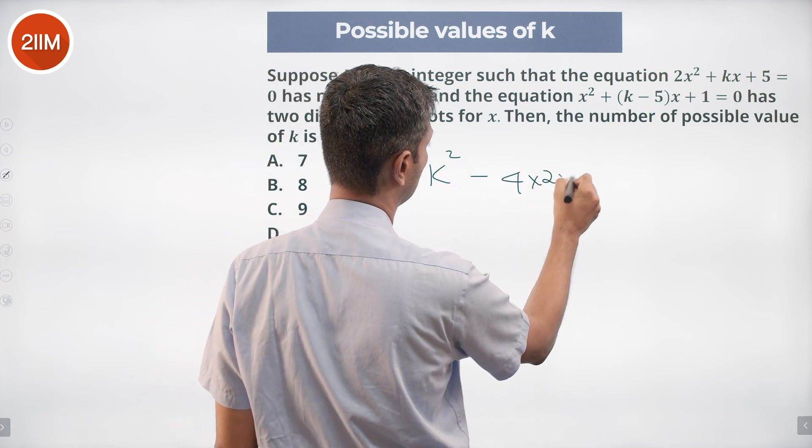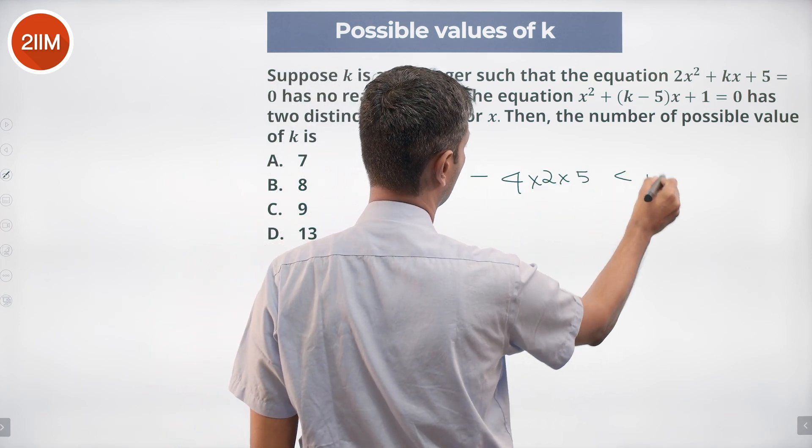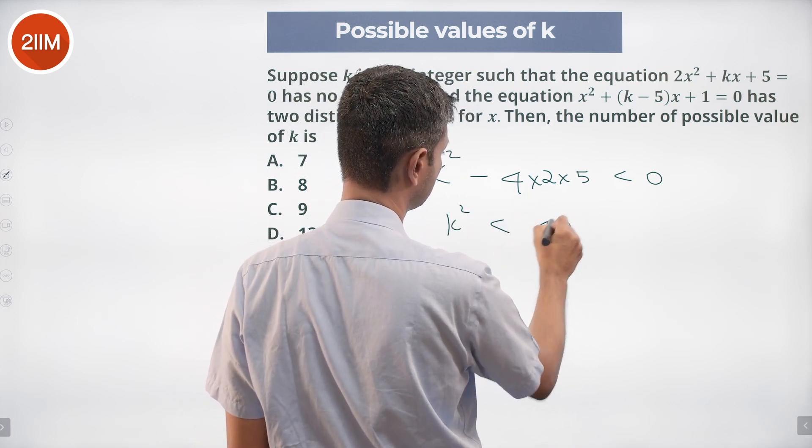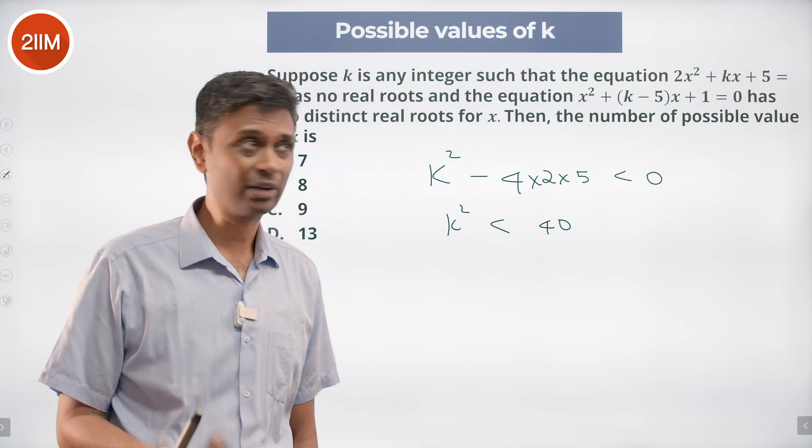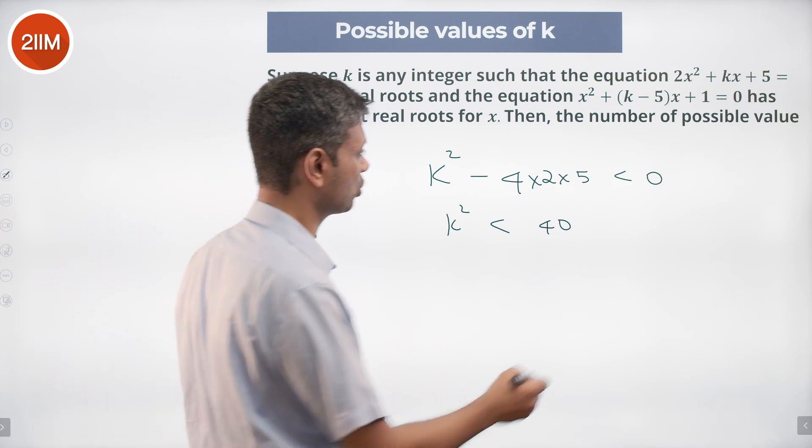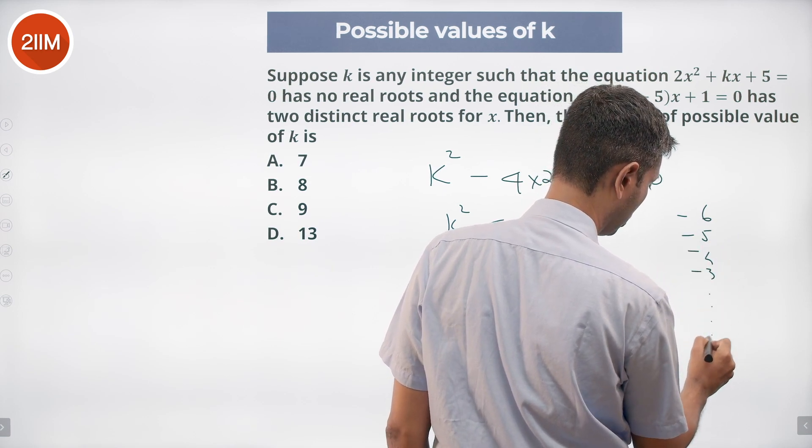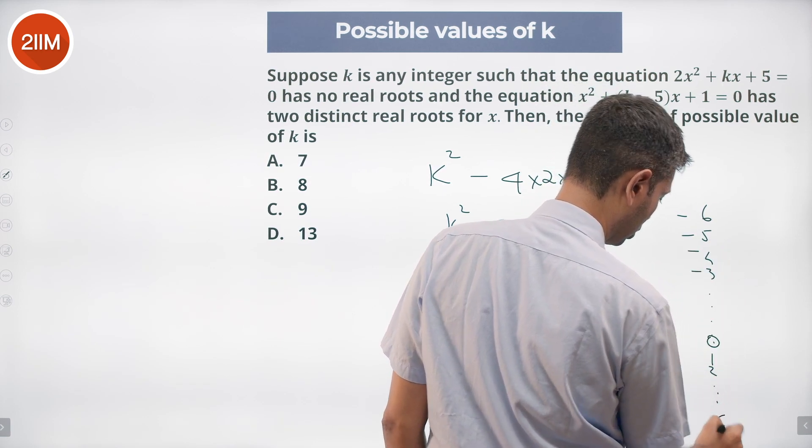k² - 4(2)(5) < 0, that is k² < 40. So we're talking about 36 as the perfect square, we're dealing with integers. So k goes from -6 to +6.